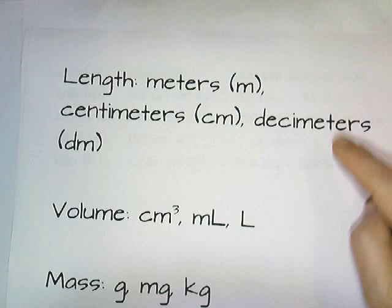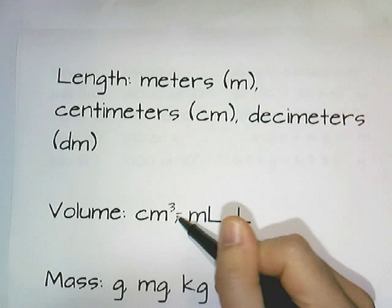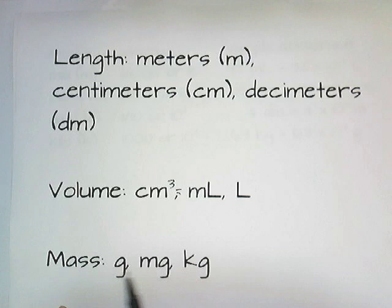Let's summarize. Length is measured in meters, centimeters, and decimeters. Volume is measured in cubic centimeters, and cubic centimeters and milliliters are the same thing — it's also measured in liters. Mass is measured in grams, milligrams, and kilograms.